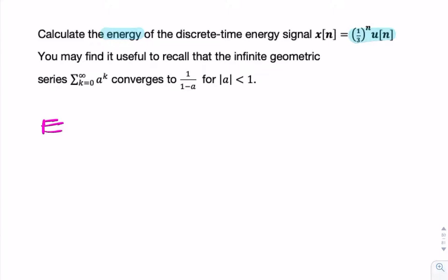Remember, the energy of a signal is simply the summation over all time of the signal squared. That would have been an integral if it was a continuous-time signal, and it's a summation in the case of a discrete-time signal.